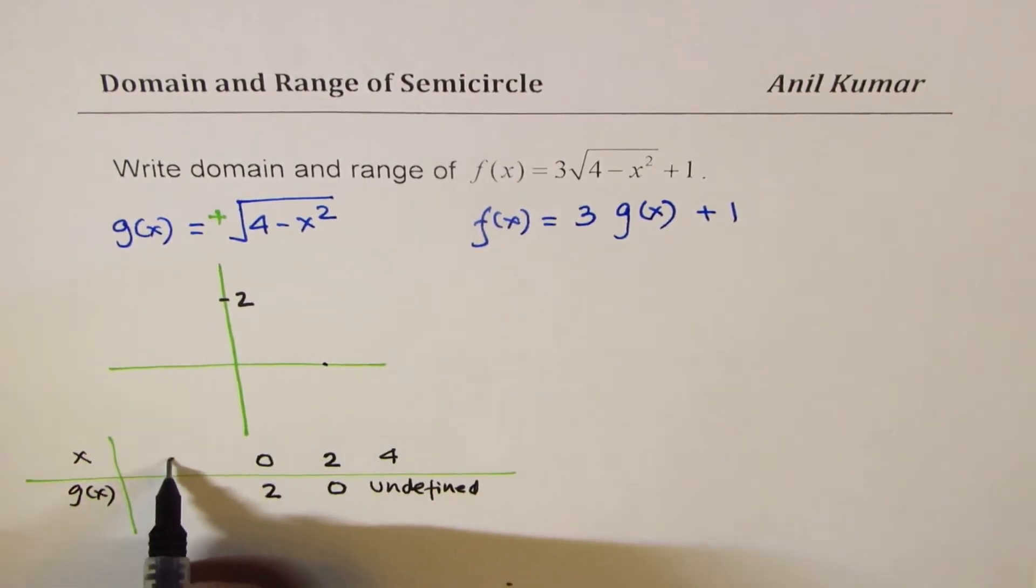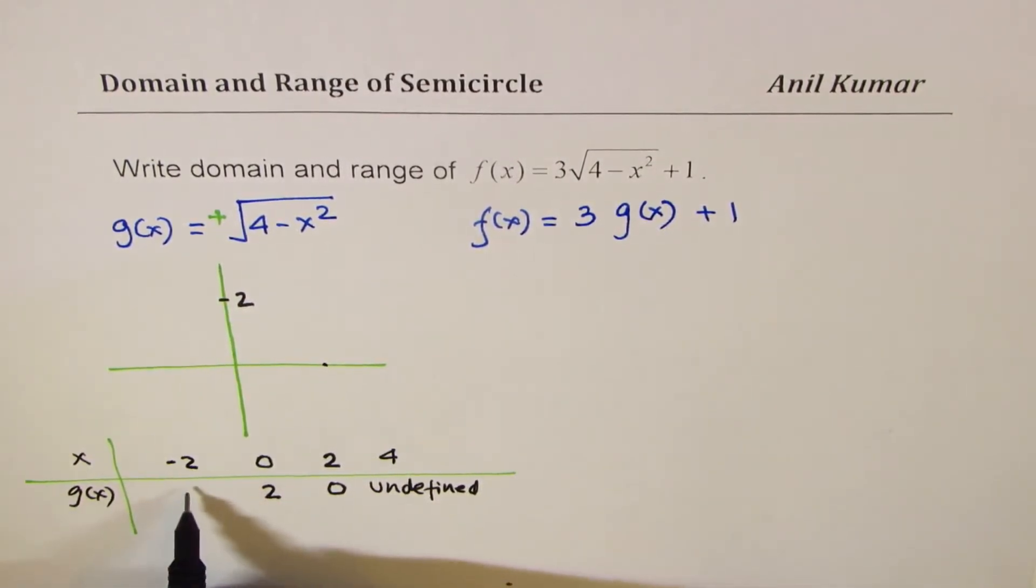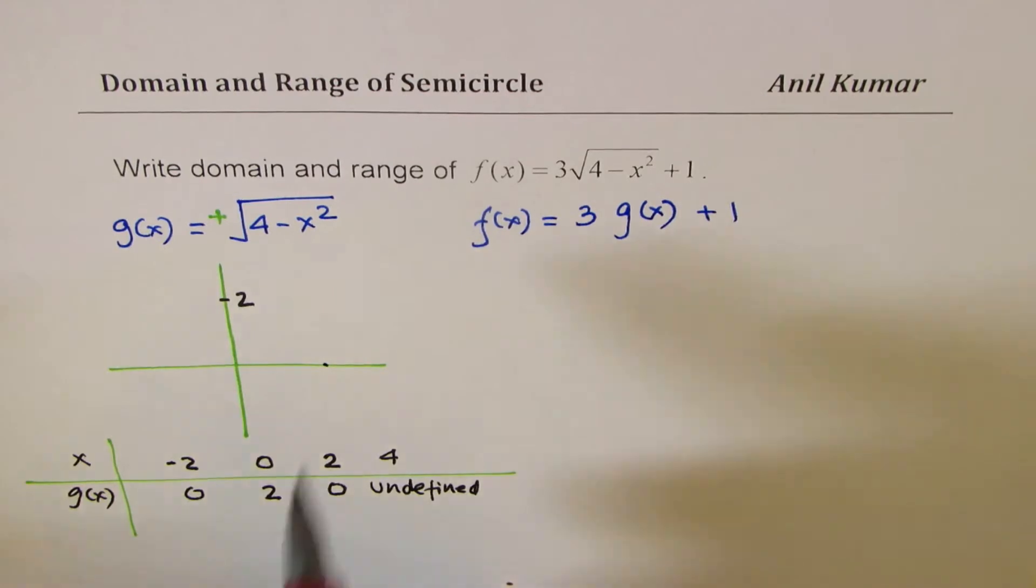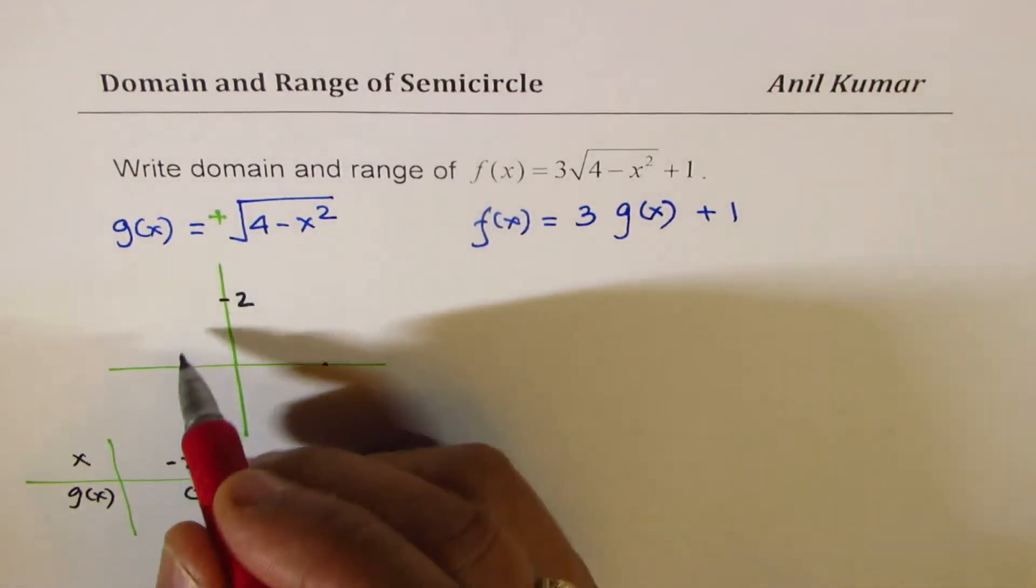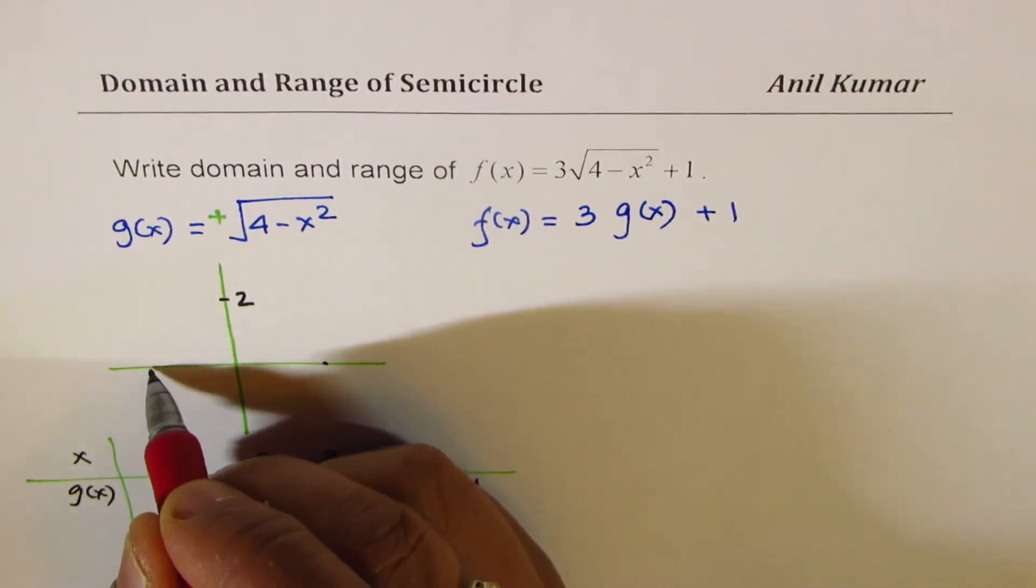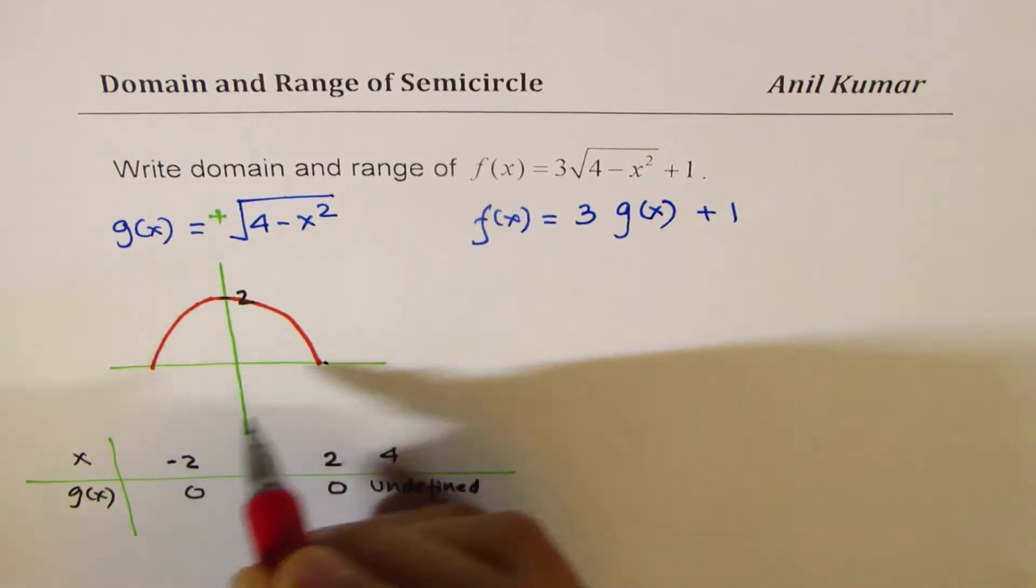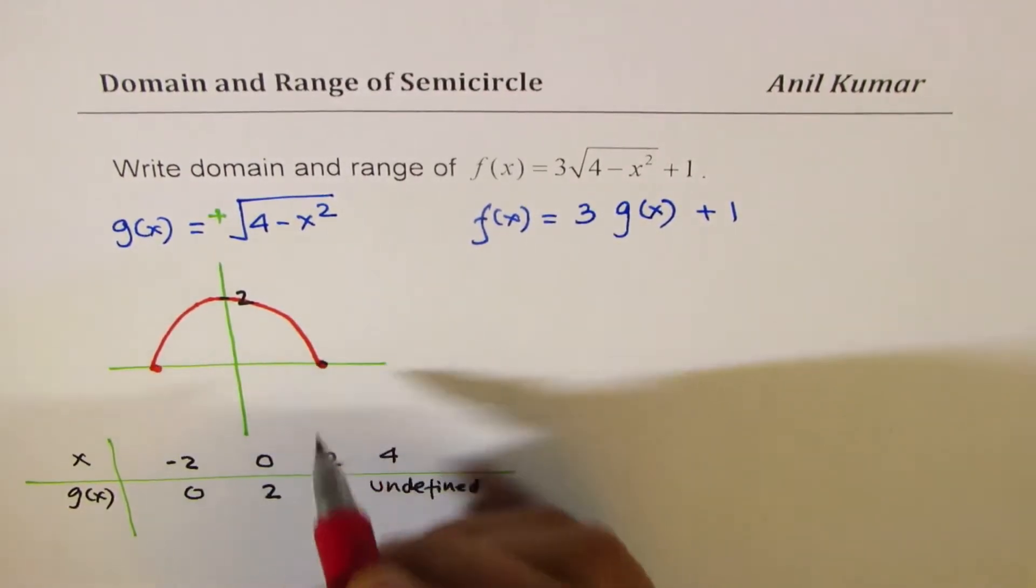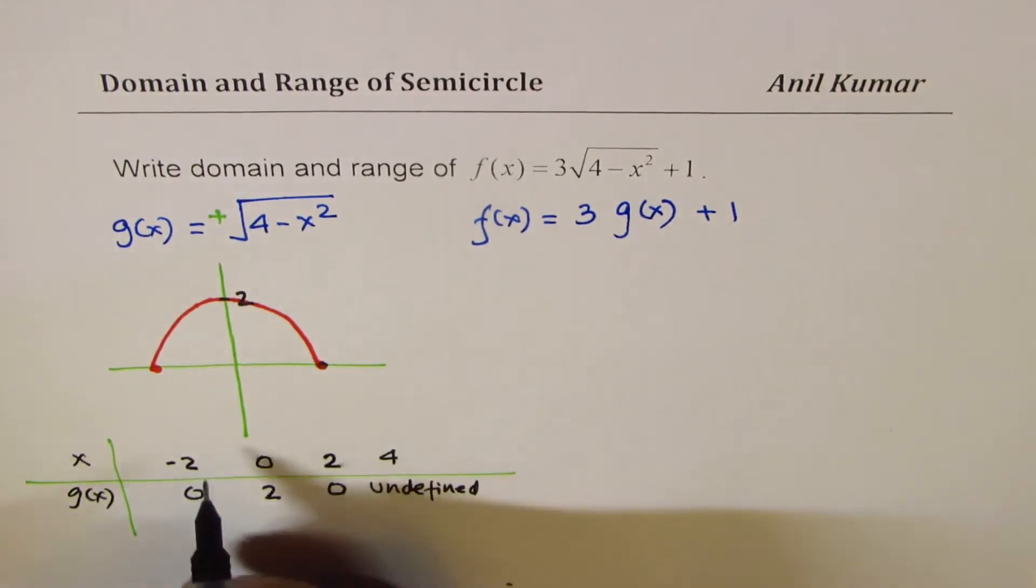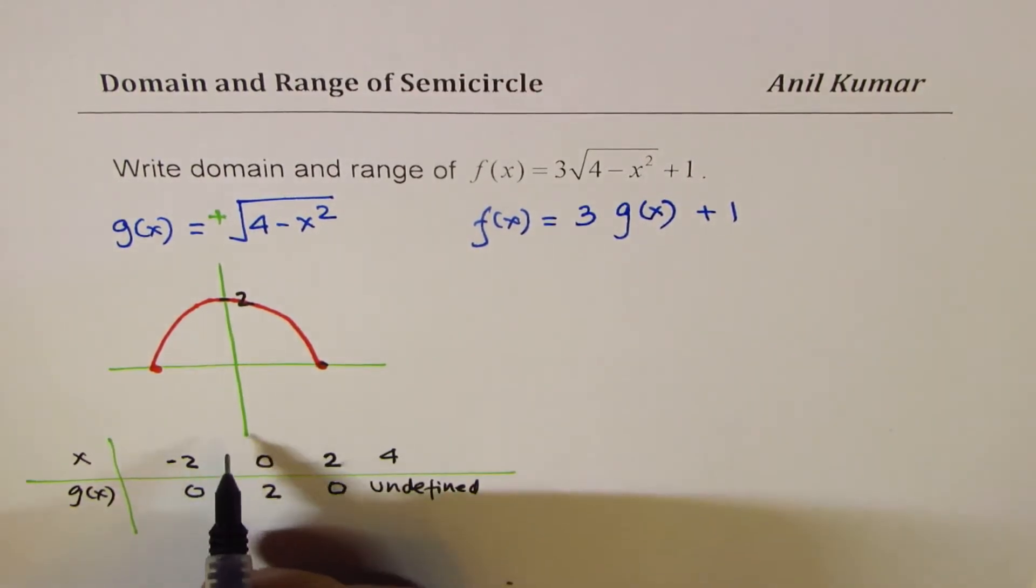Similarly, at minus 2, we get a value which is again 0. And we connect these points with different values, right? So you could take plus minus 1, getting another value, for example. So what you get here is kind of like this. So we have these points.